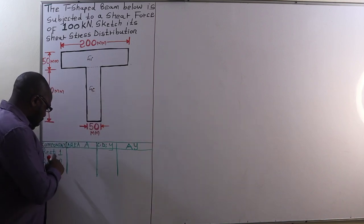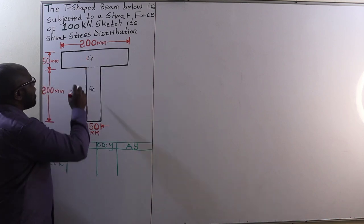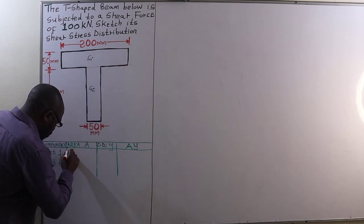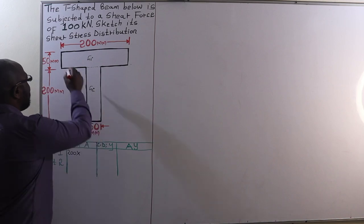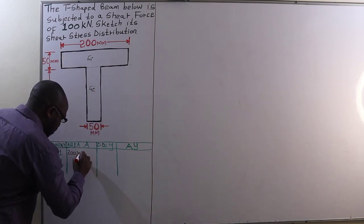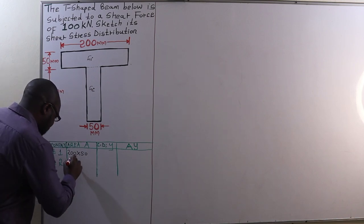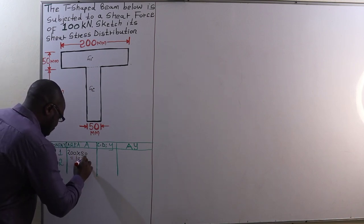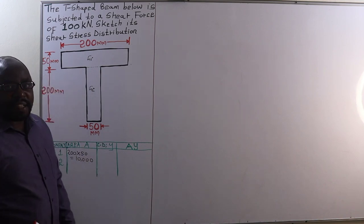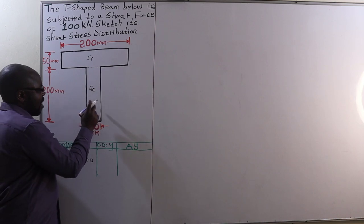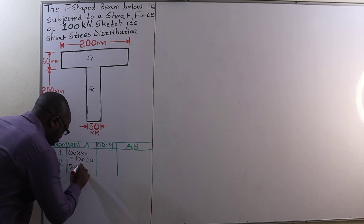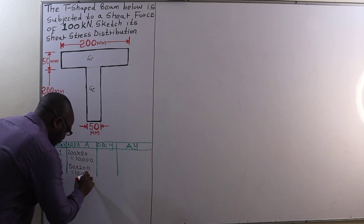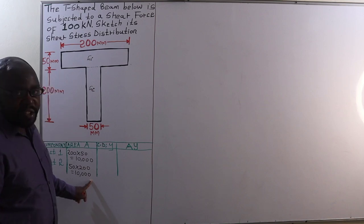Component one is the flange with area equal to 200 mm breadth multiplied by 50 mm depth, giving 10,000 mm². The web has a breadth of 50 mm multiplied by a depth of 200 mm, also giving an area of 10,000 mm².